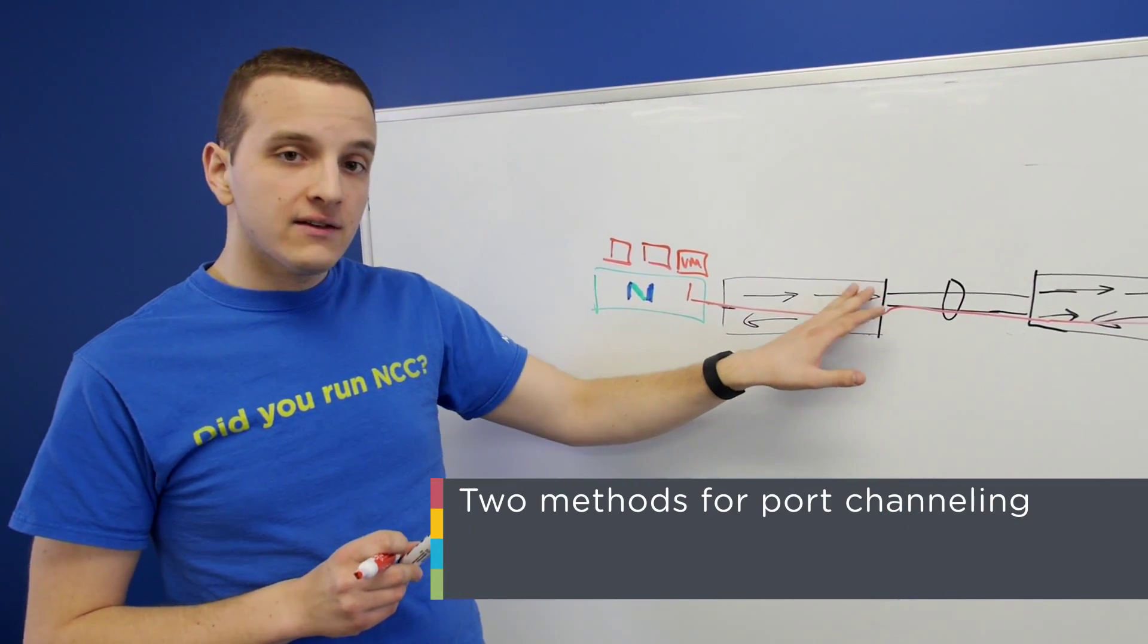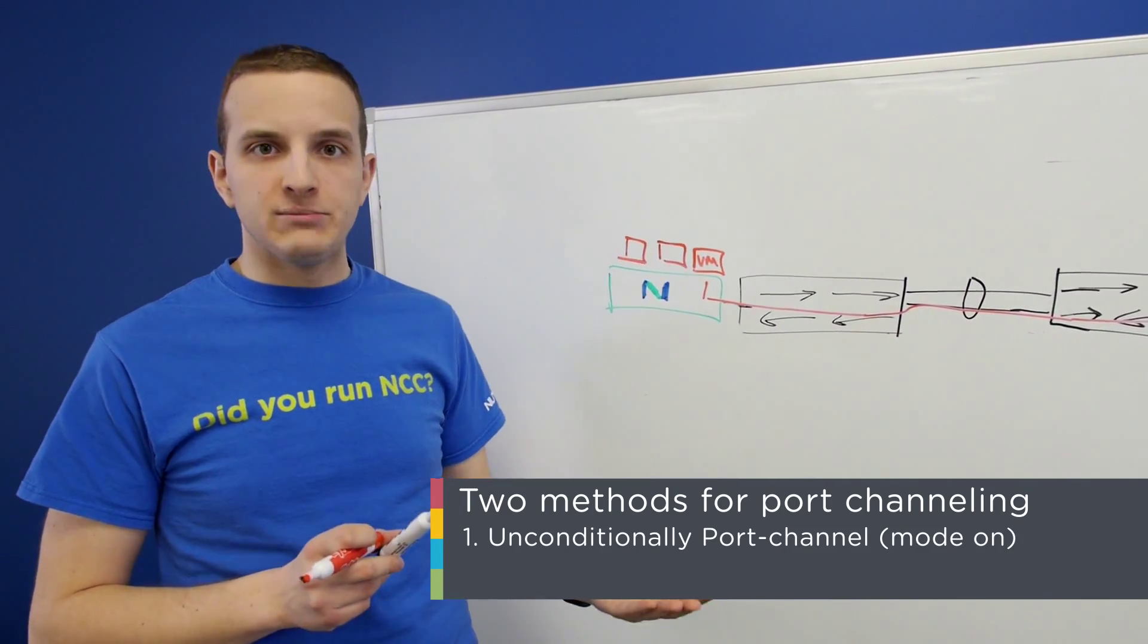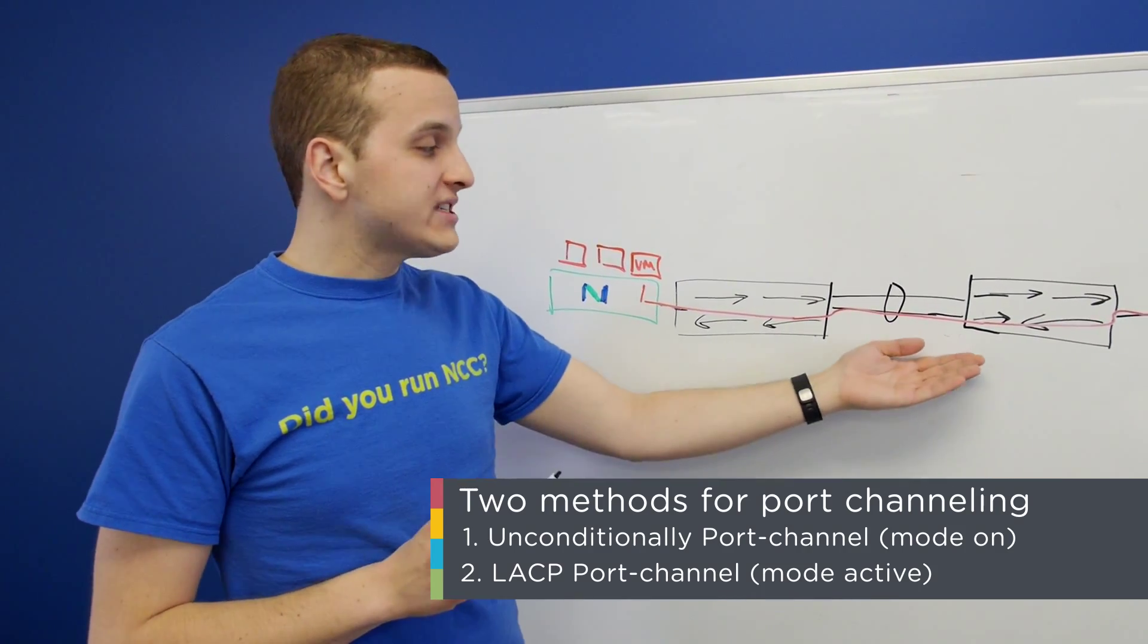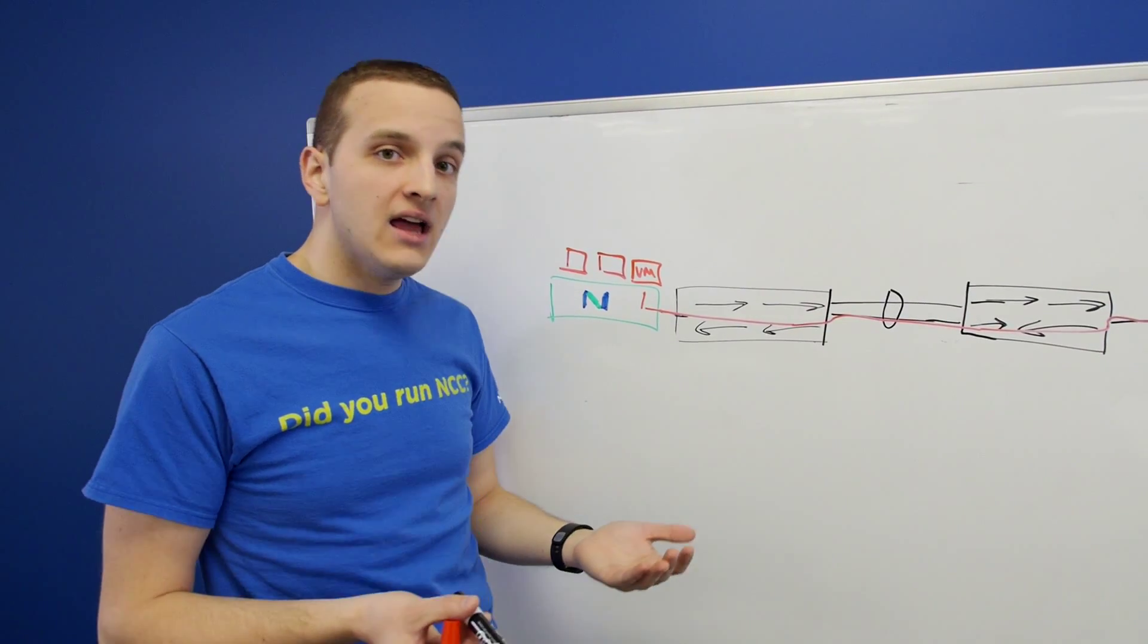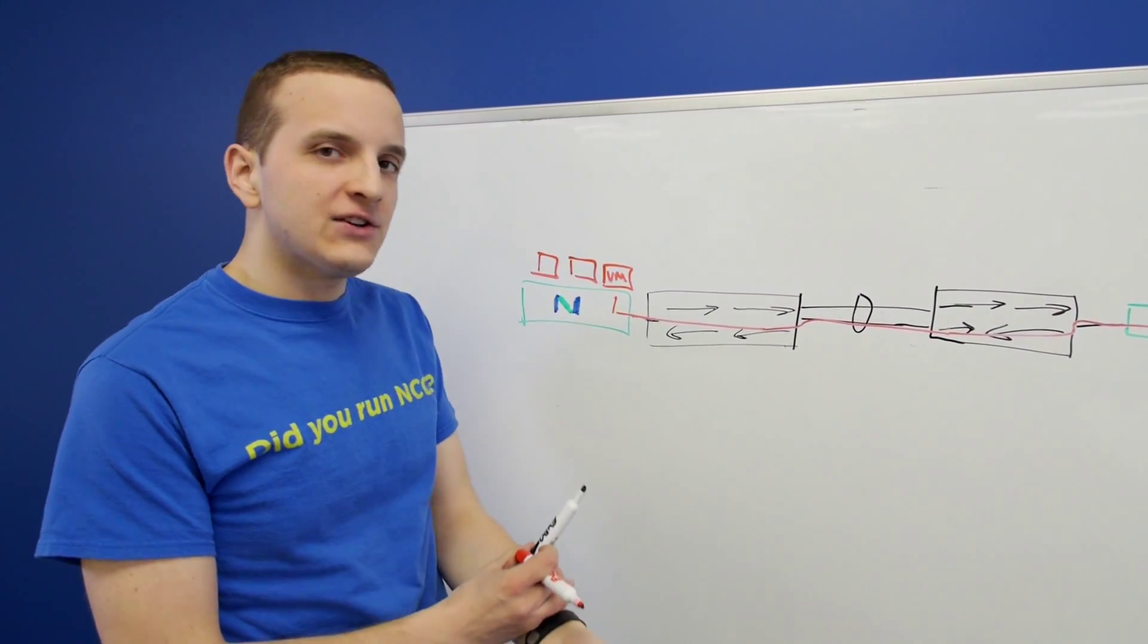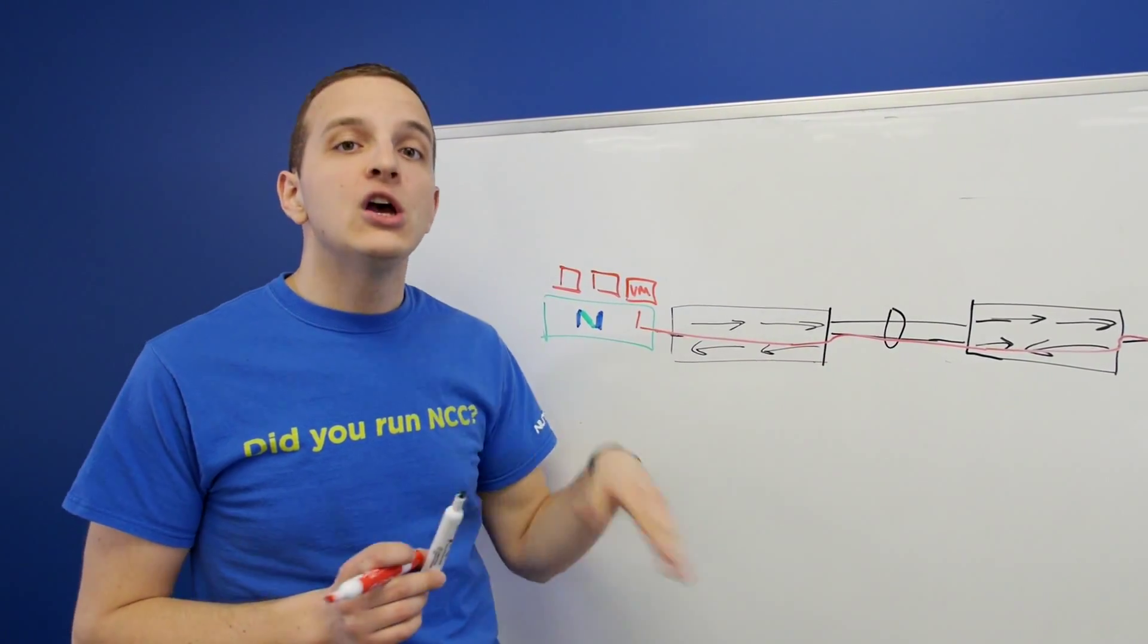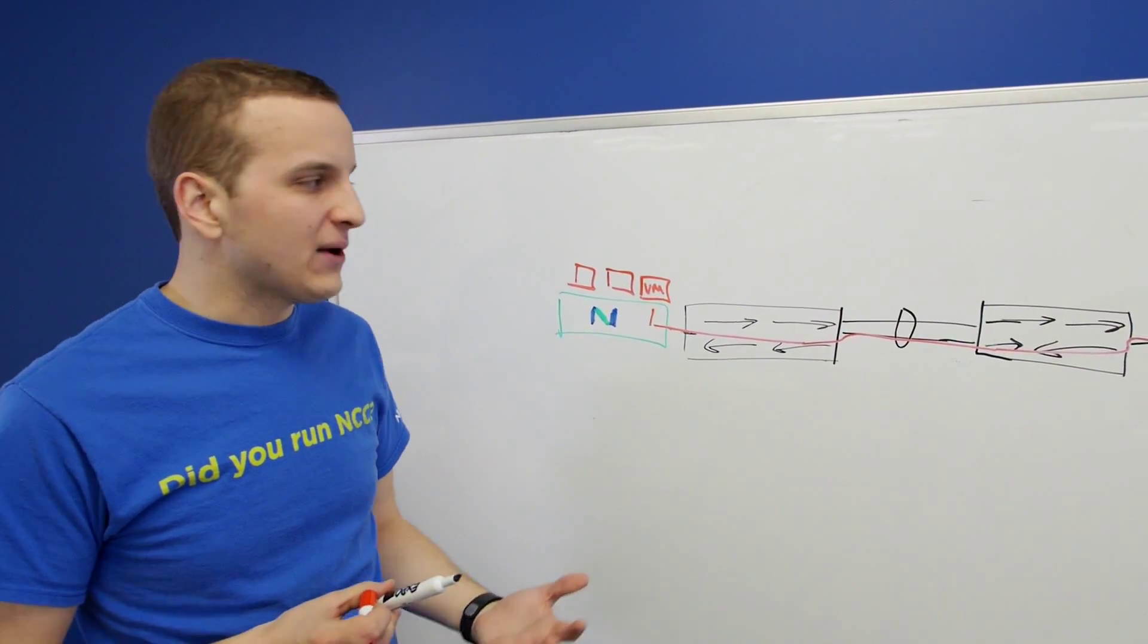There's two main methods to do port channeling on the switches. The first is mode on, or unconditionally port channel. The second is LACP, which is a negotiated port channel. The switches exchange PDUs to determine if they're ready to participate in the port channel. This protects you from misconfiguration because if one of these ports gets accidentally plugged into a wrong switch, you don't black hole your traffic. Therefore, it's always best practice to use LACP when applicable.